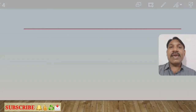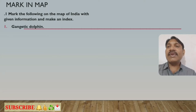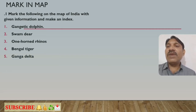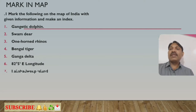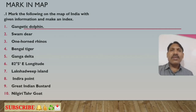Let's see what kind of question can be asked. For example: 'Mark the following on the map of India with given information and make an index.' What is asked: first, Gangetic dolphin; second, swamp deer; third, one-horned rhinos; fourth, Bengal tiger; fifth, Ganga Delta; sixth, 82 degrees 30 minutes east longitude; seventh, Lakshadweep island; eighth, Indira Point.